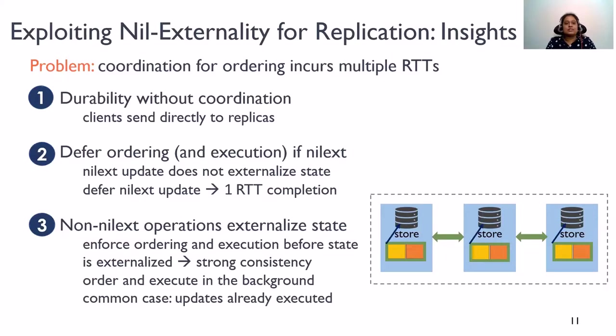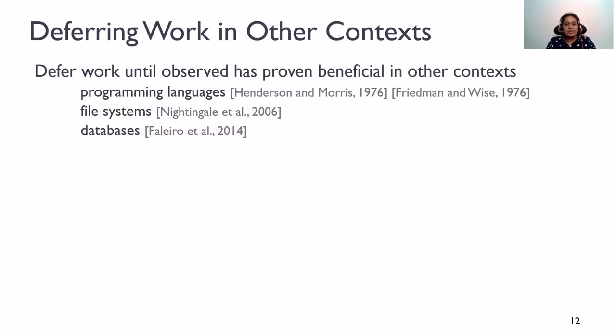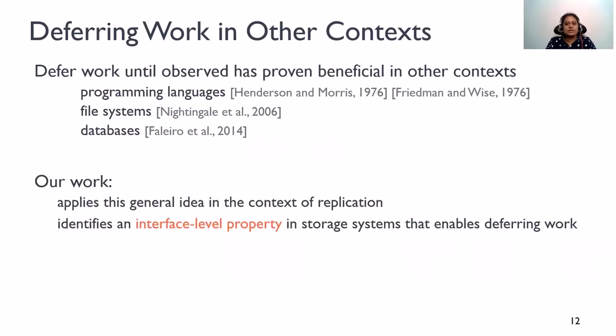And this should be enforced before the state is externalized. But this is not detrimental to performance because background work ensures that these updates have already been executed by the time the application issues a state externalizing operation. So, as you can see, this read can be completed quickly. Our core idea is to defer work until the state is externalized. This general idea of deferring work has proven beneficial in other contexts, such as programming languages, file systems, and databases. However, in this work, we apply this general idea in the context of replication to hide the cost of ordering.